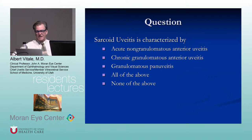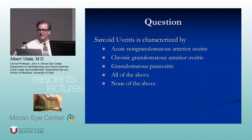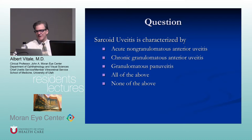Sarcoid uveitis is characterized by non-granulomatous anterior uveitis, chronic granulomatous anterior uveitis, or granulomatous panuveitis — it can do anything. Syphilis is a great masquerader, sarcoidosis is a great masquerader, and TB is a great masquerader.